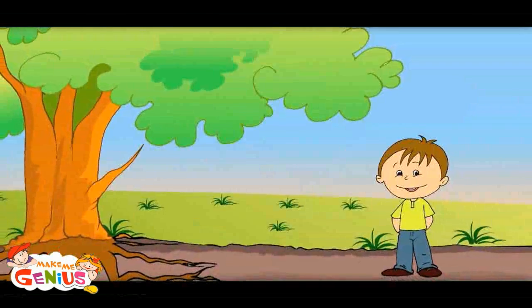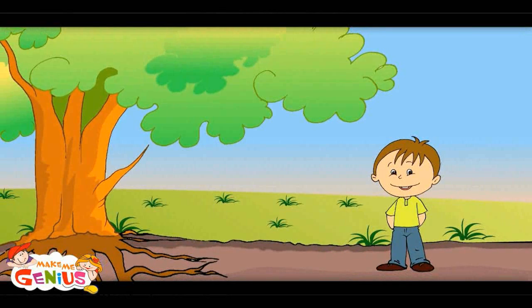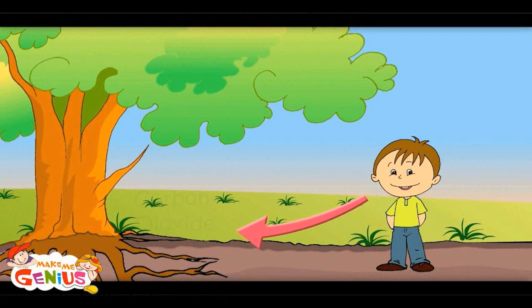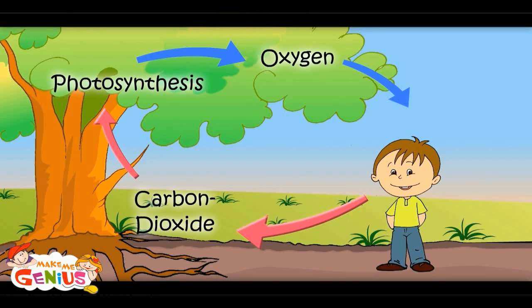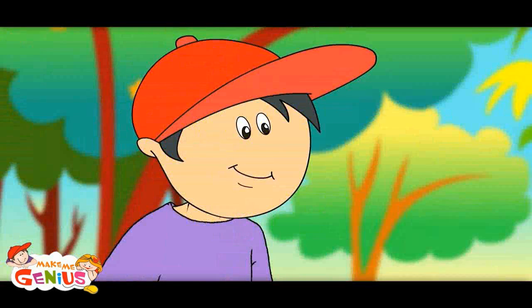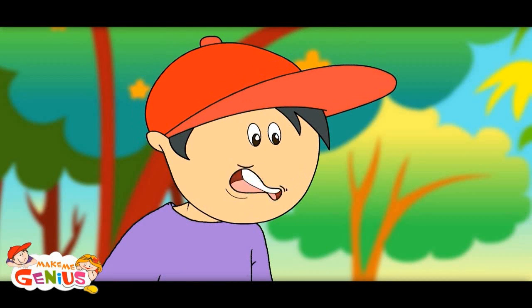What is this? Plants take the dirty air which we breathe out and give us fresh air. This dirty air is called carbon dioxide.